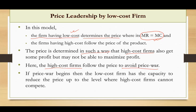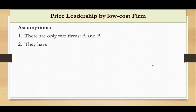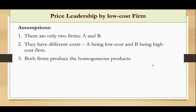Now let's move on to the assumptions of this price leadership model. The first assumption is there are only two firms — firm A and firm B. They have different costs, with A being the low cost firm and B being the high cost firm. They are producing a homogeneous product, meaning the products are similar and identical in all respects.